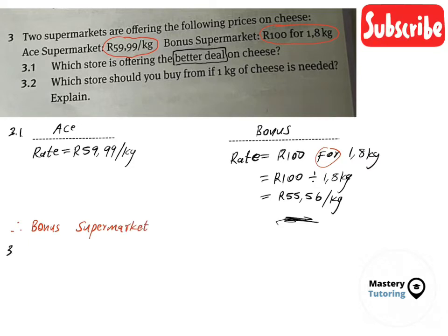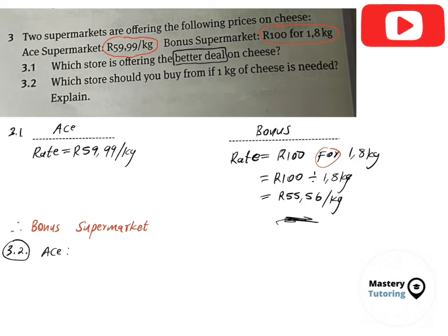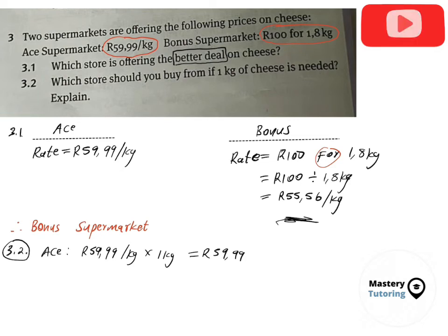Moving on to question 3.2, which asks which store you should buy from if one kg of cheese is needed, with explanation. For Ace supermarket, one kg of cheese costs R59.99 per kg multiplied by 1 kg, which equals R59.99. The kg units cancel, leaving R59.99.